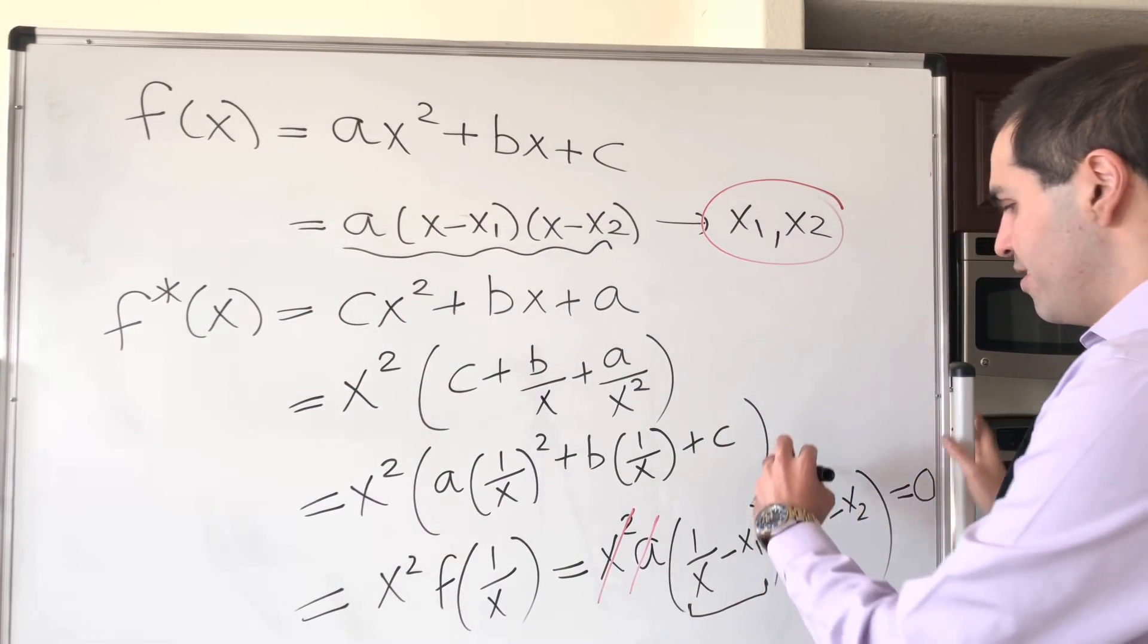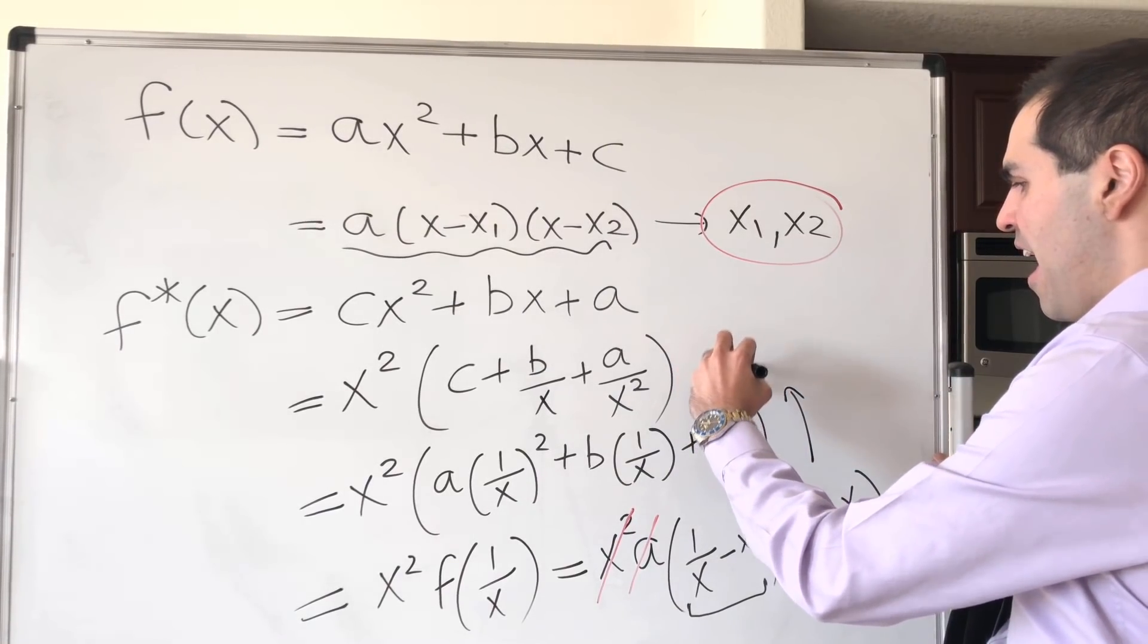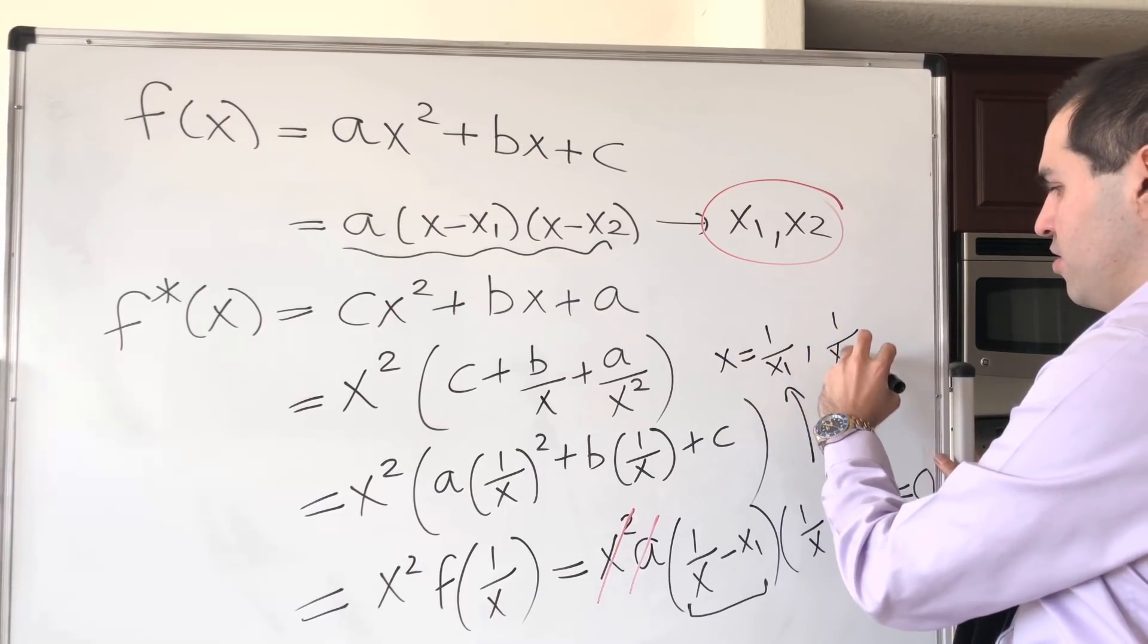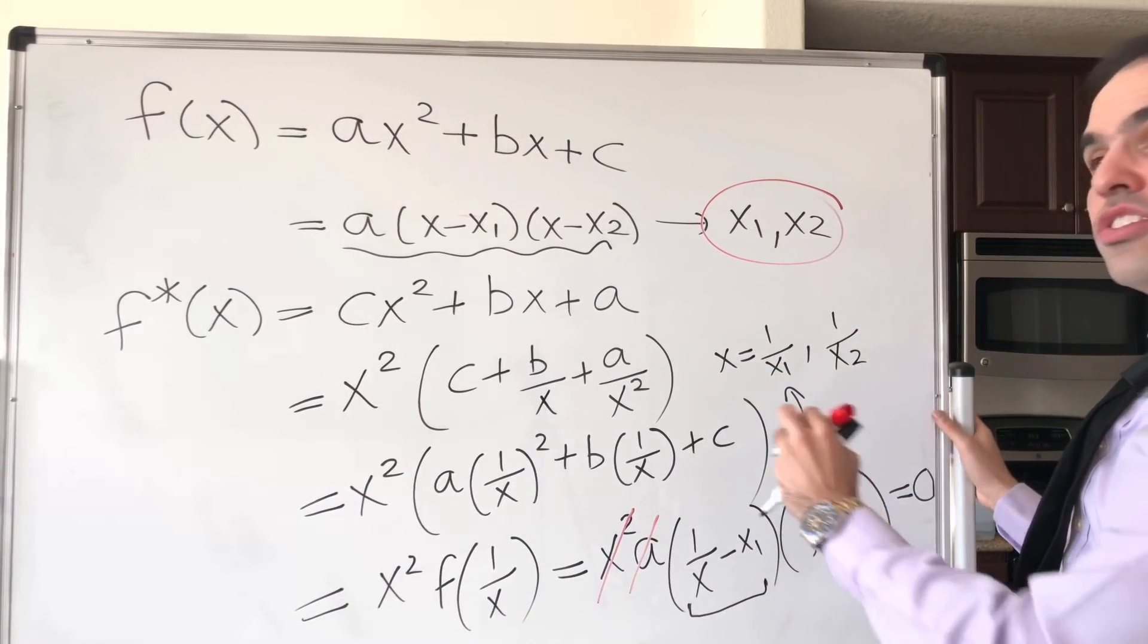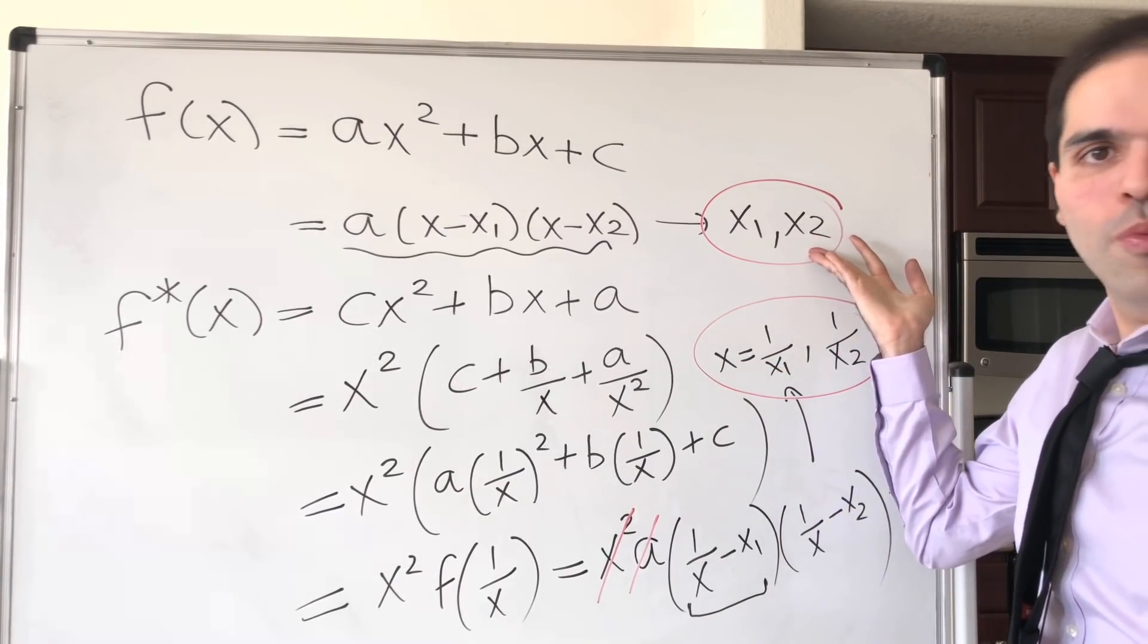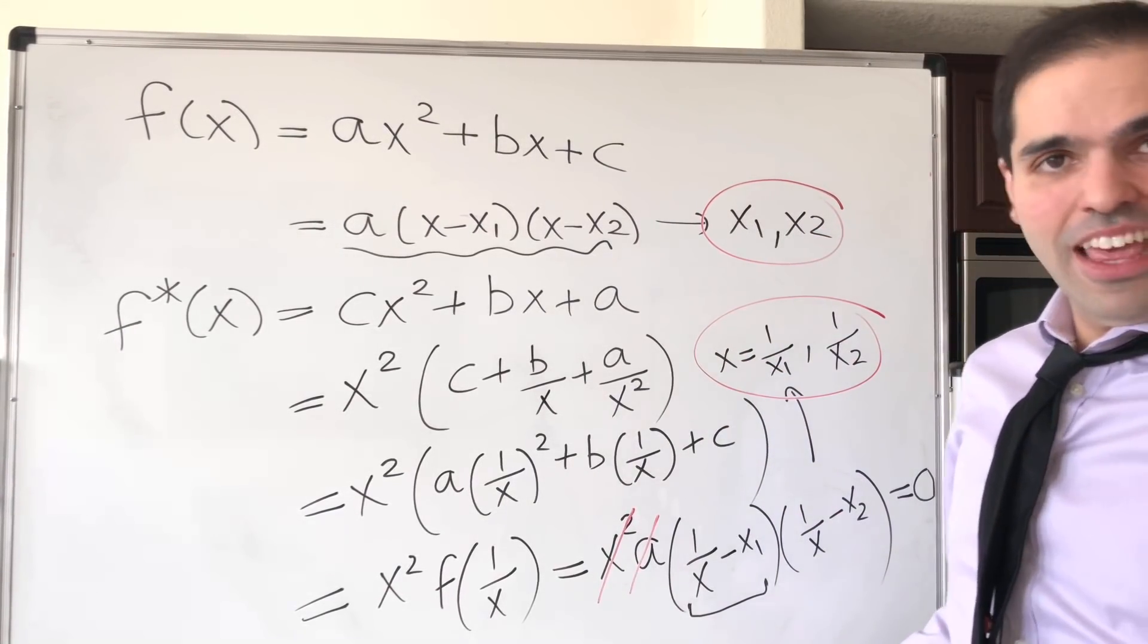And then solving for this automatically gives us x equals 1 over x1 or 1 over x2, which is precisely what we want because this just says the new roots are just the reciprocals of the original roots. And then we would be done.